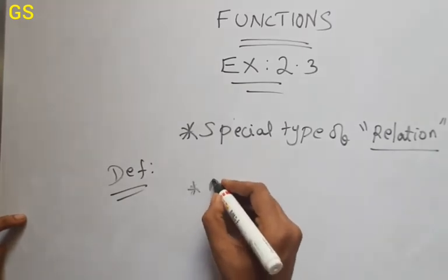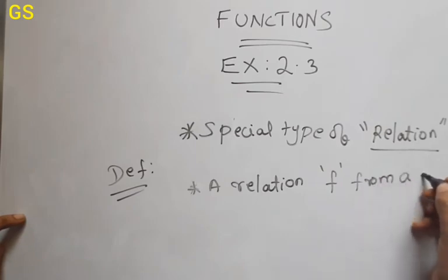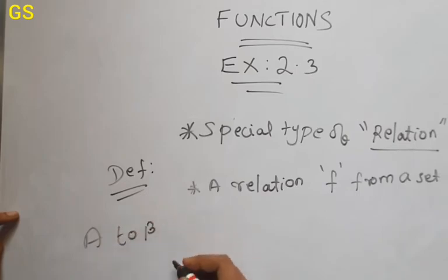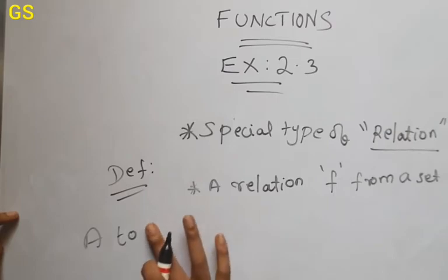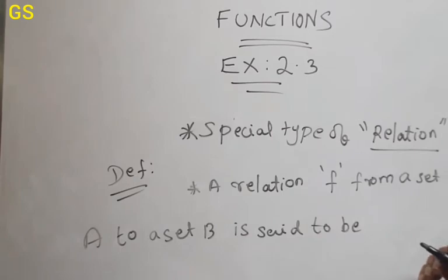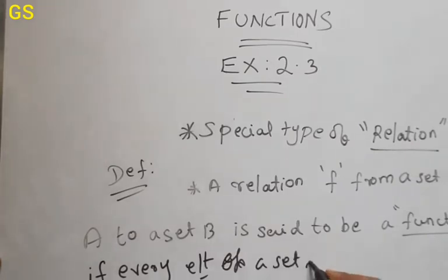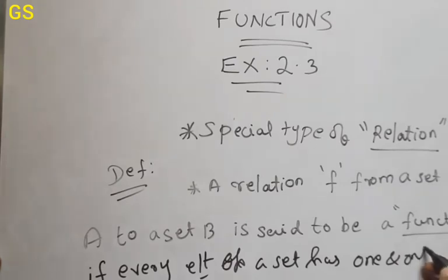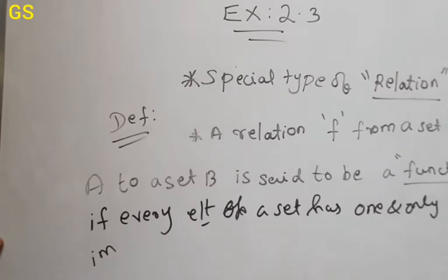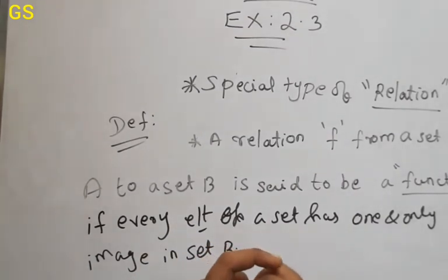Let's see: a relation F is a relation from a set A to a set B. This is said to be a function. Okay, so this is a function.